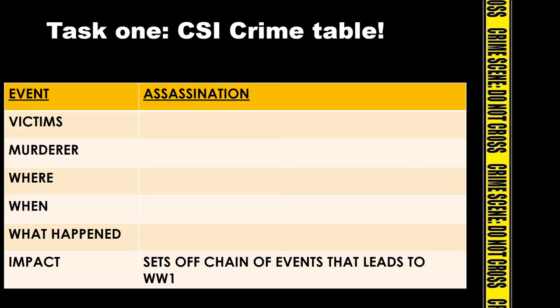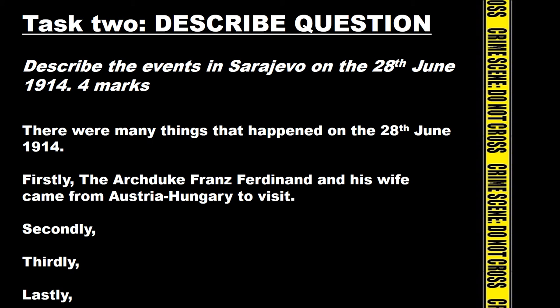Task 1, your CSI crime table, should now be filled out - you should know the victims, the murderer, where and when it happened, and what actually happened. Task 2: using the information from your table, answer a describe question worth four marks. The question is: describe the events in Sarajevo on the 28th of June 1914. Remember, a describe question requires four simple points. It's started for you: 'There are many things that happened on the 28th of June 1914. Firstly, the Archduke Franz Ferdinand and his wife came from Austria-Hungary to visit.' Give three more points with details about what took place. Pause the video to complete this question.